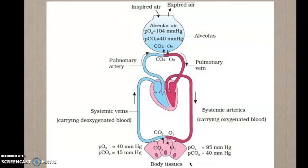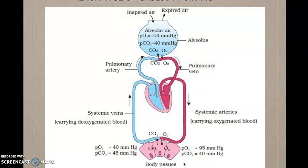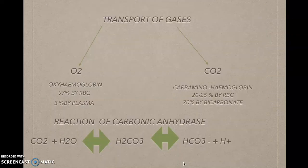The artery carries pure blood which carries oxygen, so O2 is more in the blood than in the tissue, and O2 diffuses from blood to tissues. Carbon dioxide is more in the tissues, so CO2 diffuses from tissues to the blood. The blood then travels through the systemic vein to the heart, then through the pulmonary artery to the lungs, where CO2 diffuses into the alveoli and is exhaled out.